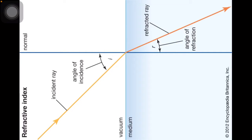There is a condition for refractive index: when light travels from one medium to another and the mediums are different, the direction of propagation will change at the separating point.